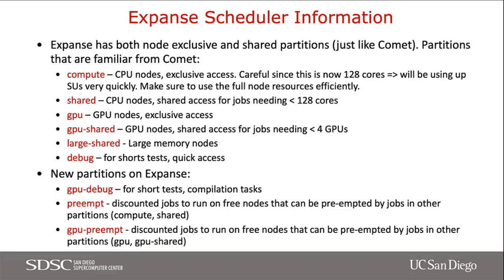What's new on Expanse: we have a GPU debug partition — something many users asked for on Comet — for short tests and compilation tasks. We also have preempt partitions which discount the SUs used so that you can run on nodes if they're free, but jobs can be preempted by jobs in other partitions like compute or shared. Similarly, there's a GPU preempt partition.